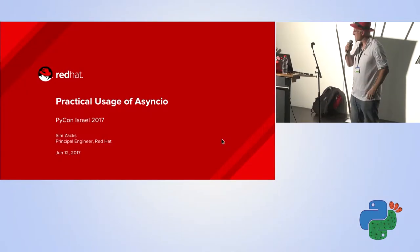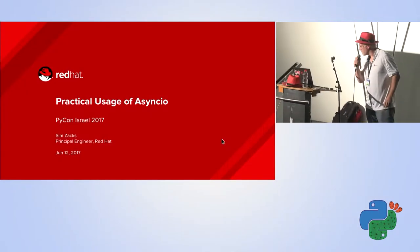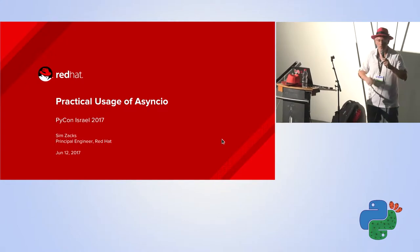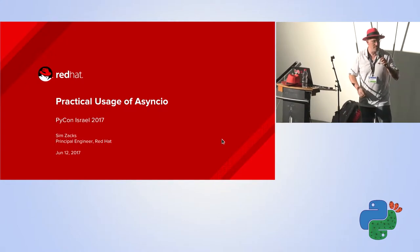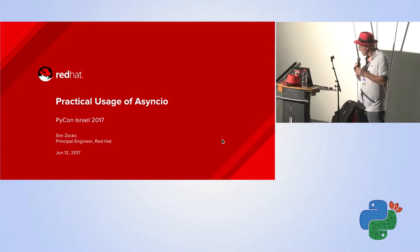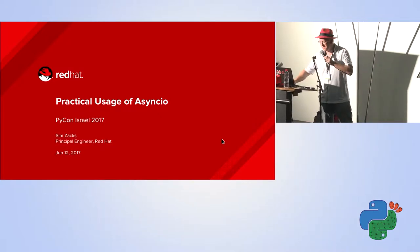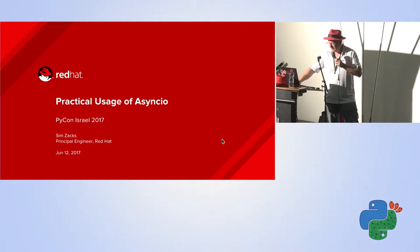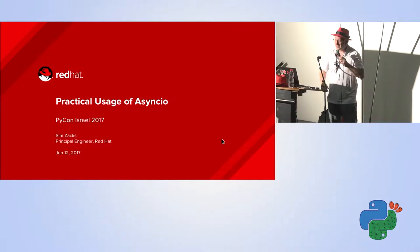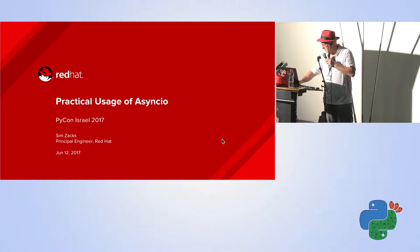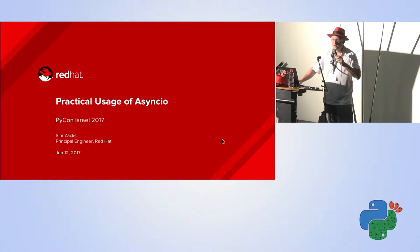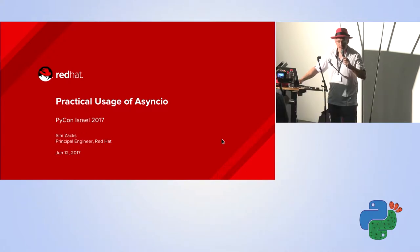Hi, I'm Sim Zaks. I'm a principal engineer at Red Hat. I work in DevOps. We do a lot of funky, cool stuff in Python. And today we're going to talk about practical usage of AsyncIO, which is a new technology that came out in 3.4. The syntax I'm going to use is 3.6, which is slightly different.